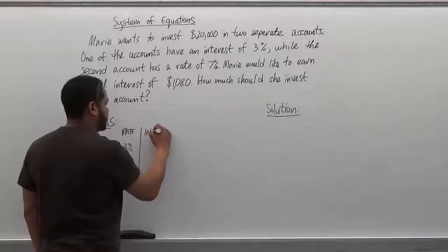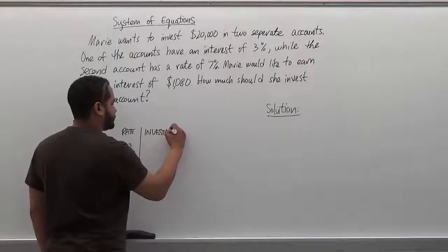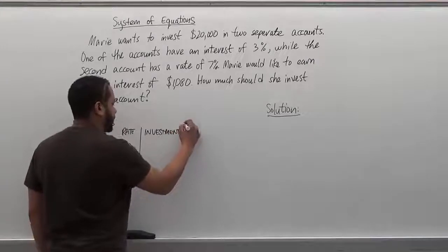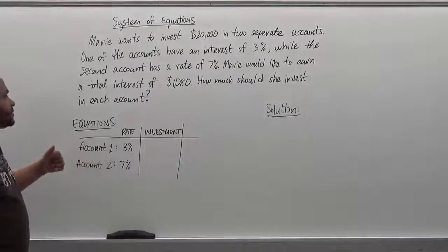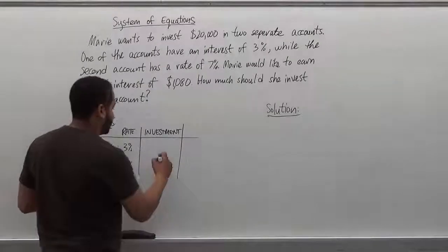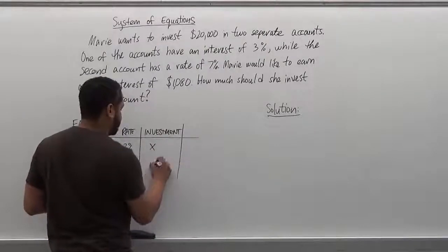Now the investment in each account is what's important. And since we have a system of equations we know we're going to have two different variables to indicate what the total amount is that they have. So the first one is just going to be x, the second one will be y.